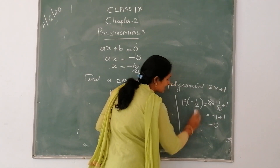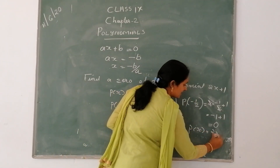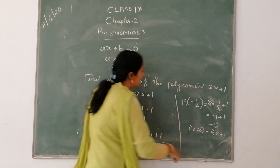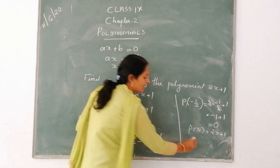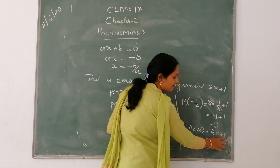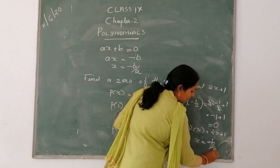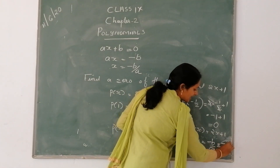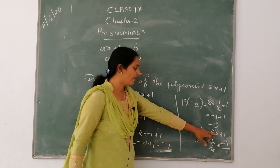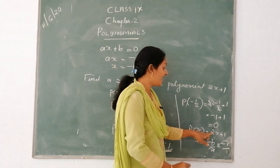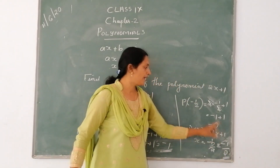In this example, the given polynomial is 2x plus 1. We will use the formula x is equal to minus b by a. The value of b is 1. Therefore, minus b is minus 1, divided by the value of a, which is 2. Therefore, we get minus 1 by 2.